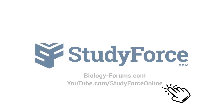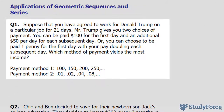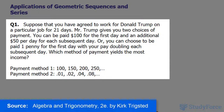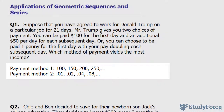In this lesson we'll discuss how we can apply geometric sequences and series to a real life problem. Suppose that you have agreed to work for Donald Trump on a particular job for 21 days. Mr. Trump gives you two choices of payment. You can be paid $100 for the first day and an additional $50 per day for each subsequent day, or you can choose to be paid one penny for the first day with your pay doubling each subsequent day. Which method of payment yields the most income? You are working for 21 days.